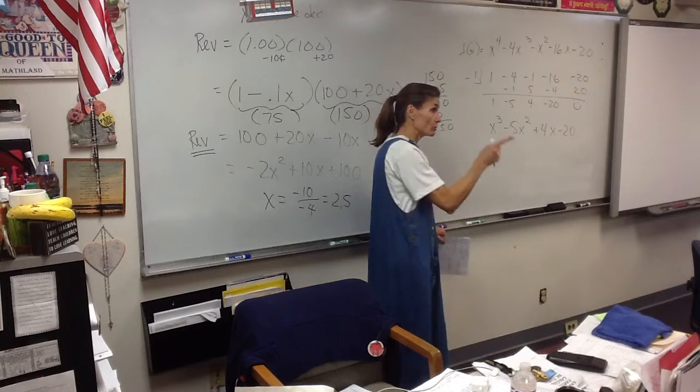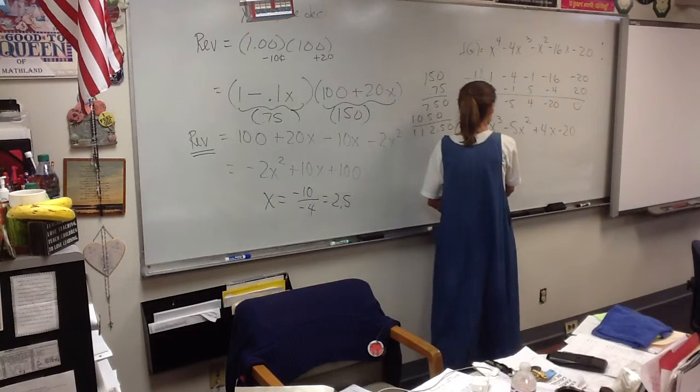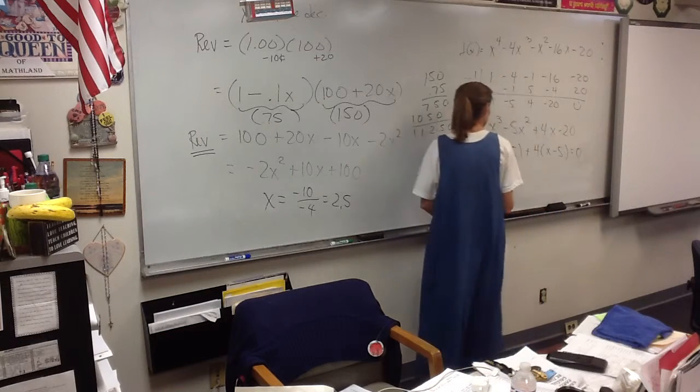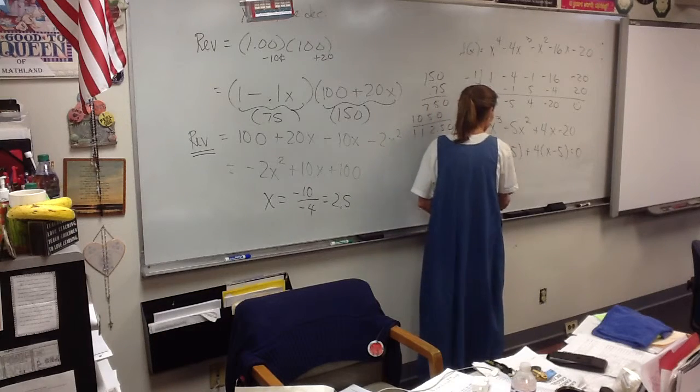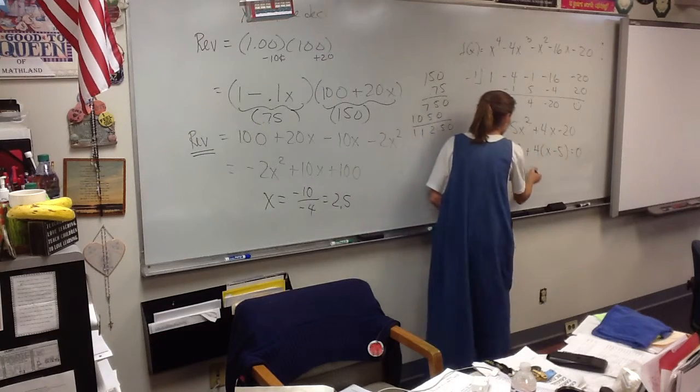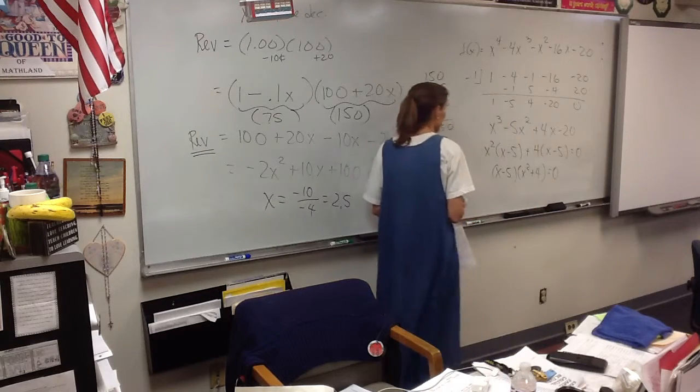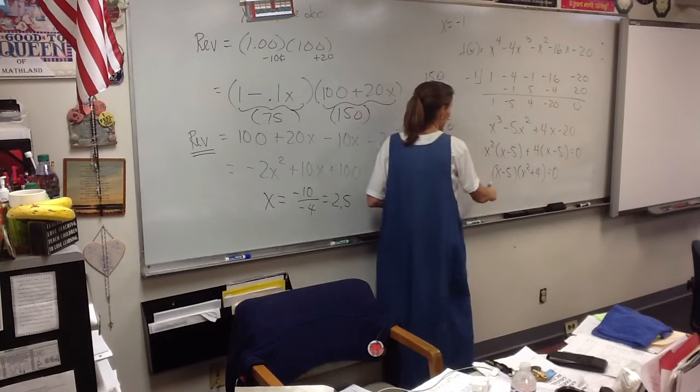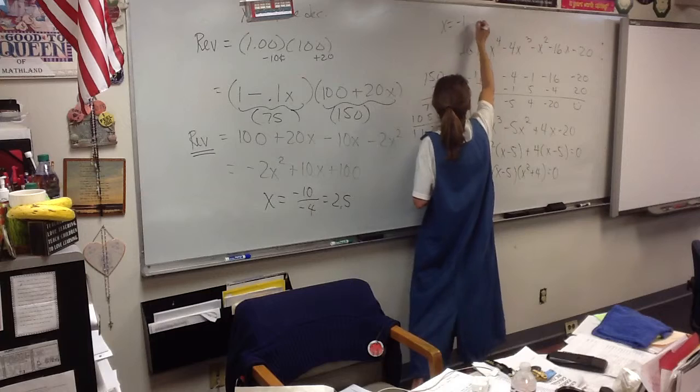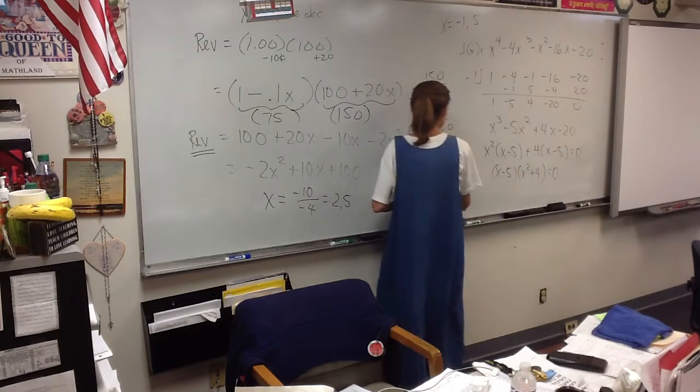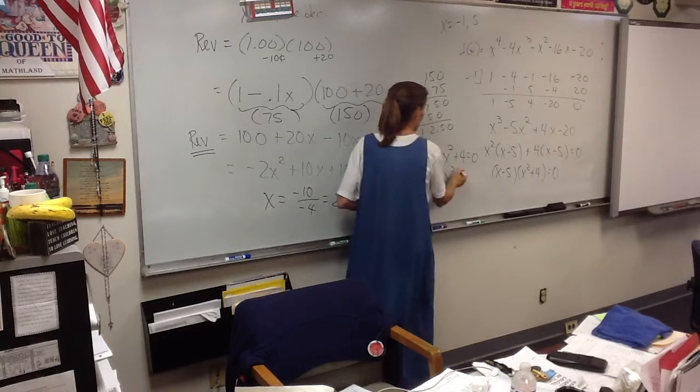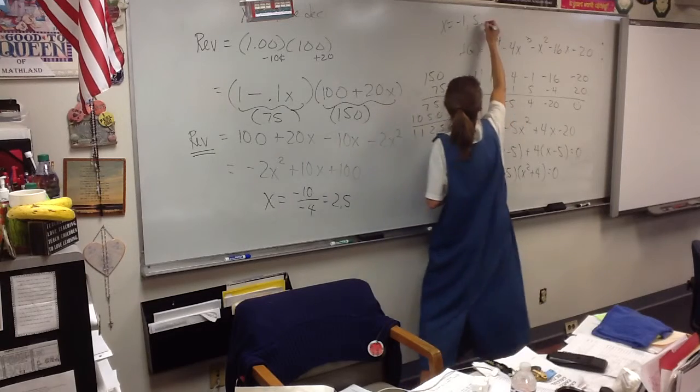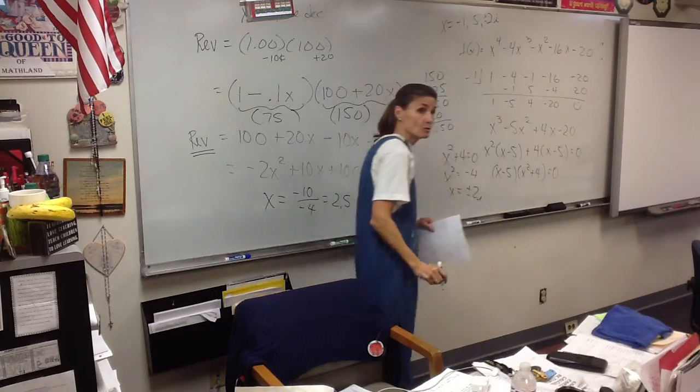And if you're alert, that groups. You don't have to group it, you can guess another number, but it does group. So I have x minus five as my common factor, and then x squared plus four. So one of the roots was negative one, that's the one you guessed and divided out. What's another root? Five.